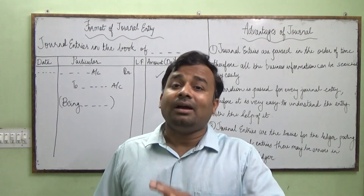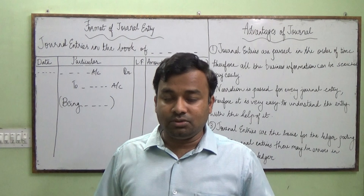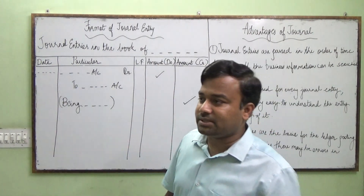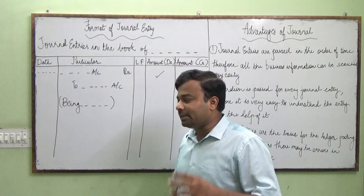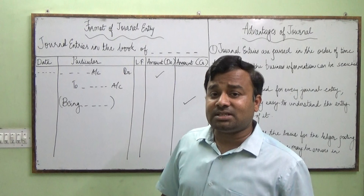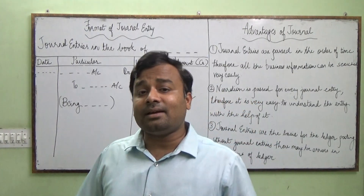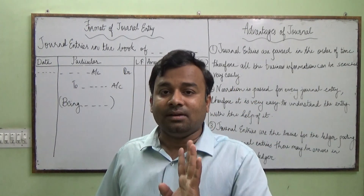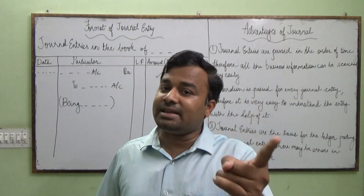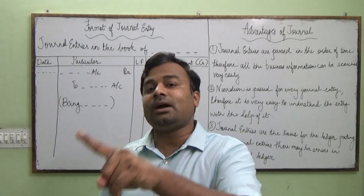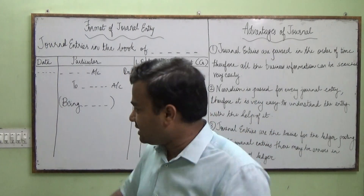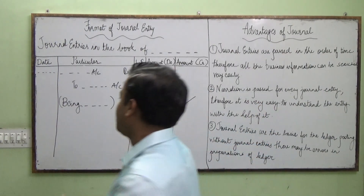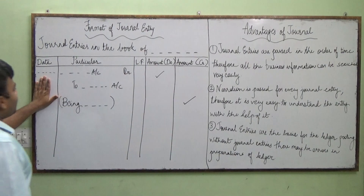As per the double entry system, every transaction has two aspects — debit and credit. So let's understand how we record it. The first column is Date, which records the date of the transaction.